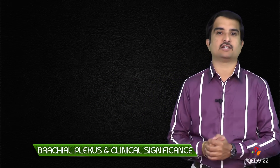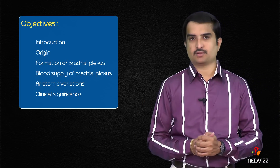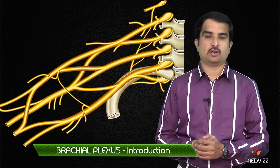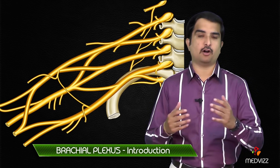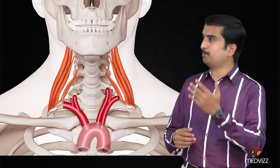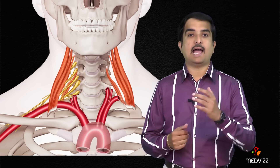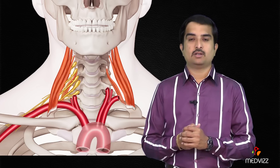The topic for today's discussion is the anatomy of the brachial plexus as well as its clinical importance. The objectives of today's lecture cover the brachial plexus somatic fibers, which are mainly formed by the ventral rami of C5 to T1. These plexus traverse the posterior triangle of the neck and the interscalene triangle.